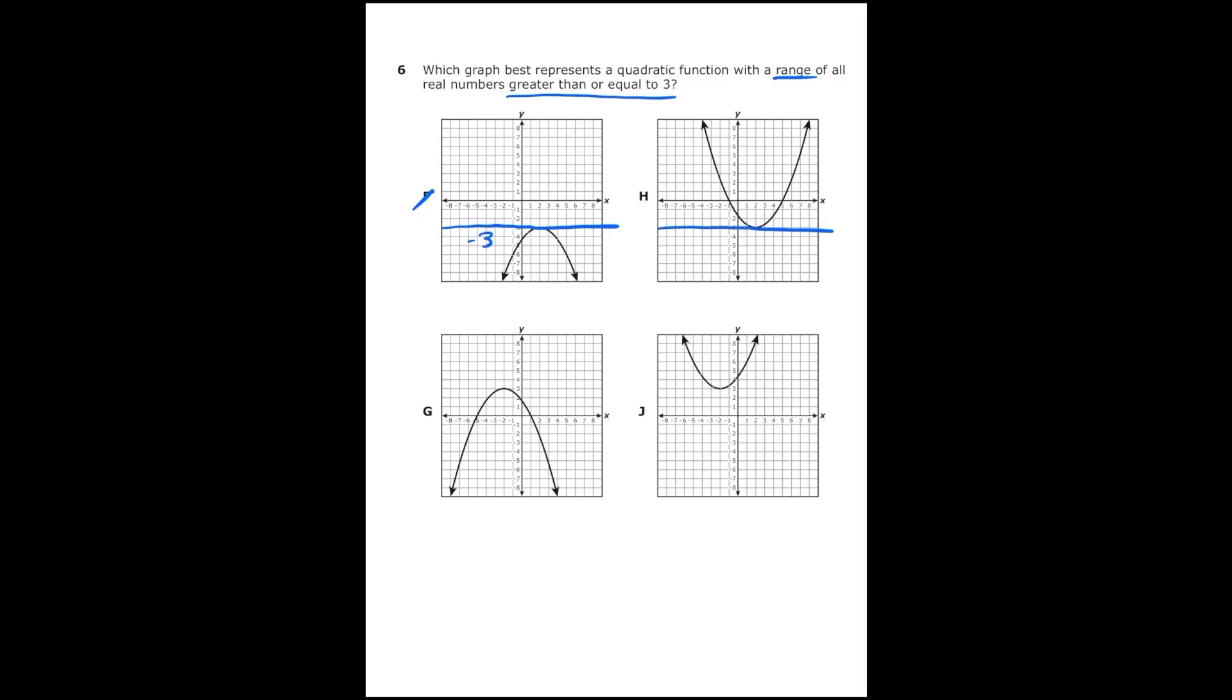Moving over to letter H, I see that my graph goes down to negative three on the y-axis, but it never goes below that. Everything is above that. So my range is all real numbers greater than or equal to negative three, which again is not correct.